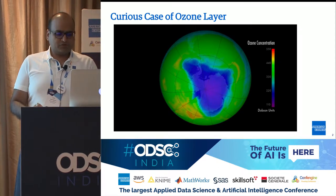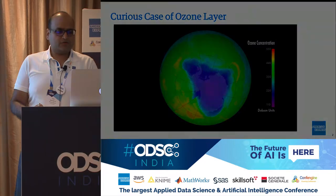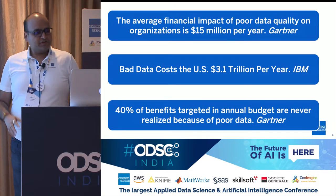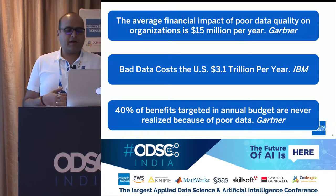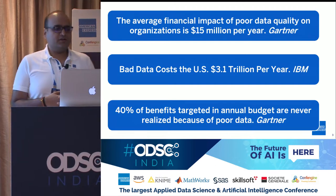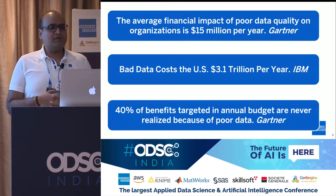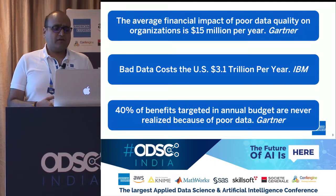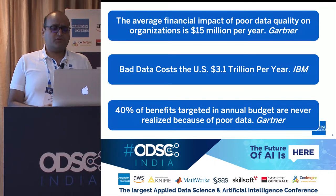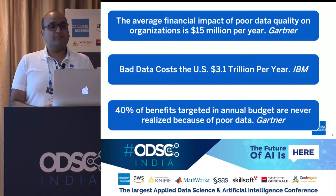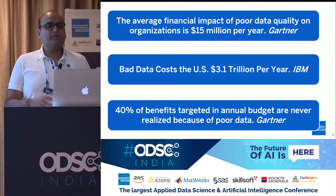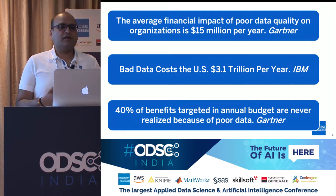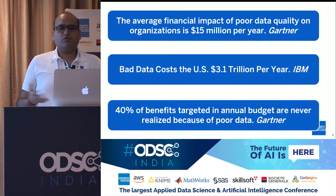I'll share some quotes from the internet. The average financial impact of poor data quality on organizations is almost $15 million per year — that's by Gartner. Bad data costs US organizations $3.1 trillion per year. These are big numbers. Every company, every organization has some impact from poor data quality.